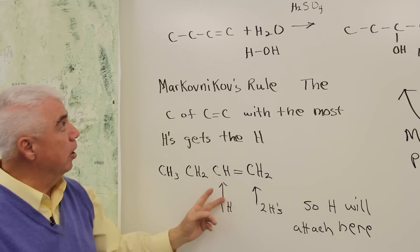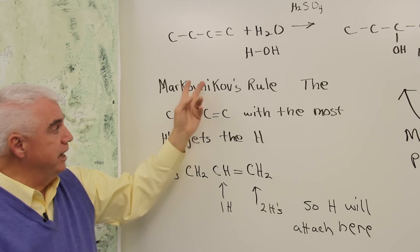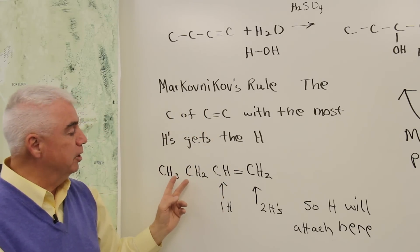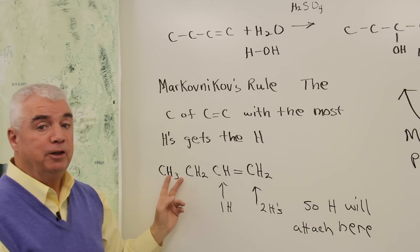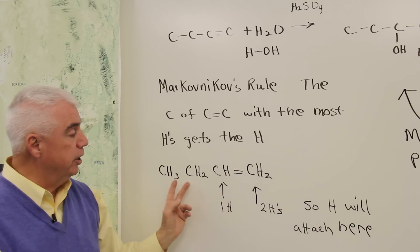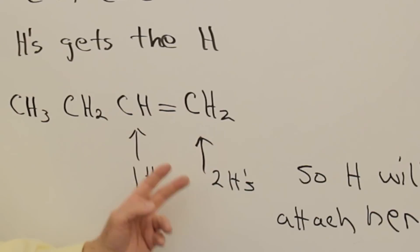So let's look at our structure. And in order to analyze this according to Markovnikov's rule, we need to put in those hydrogens. So here's the structure. The carbon on the right has two hydrogens. The one on the left has one hydrogen attached to it. That means that this is the carbon, the one on the right, that will pick up the new hydrogen. The OH then must come to this position.